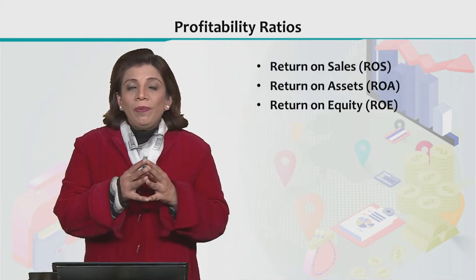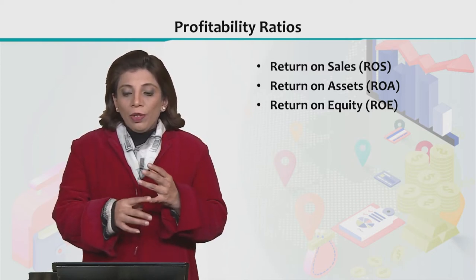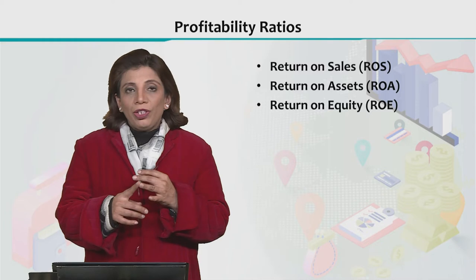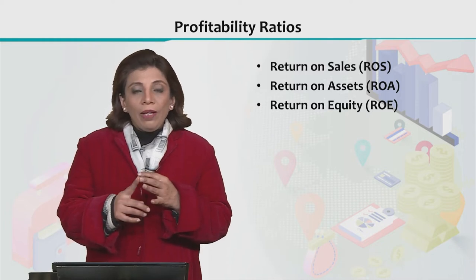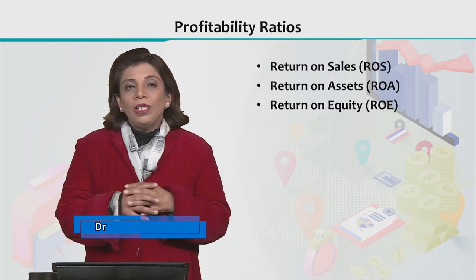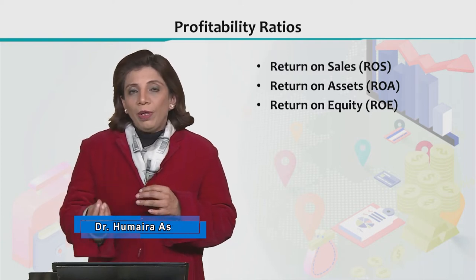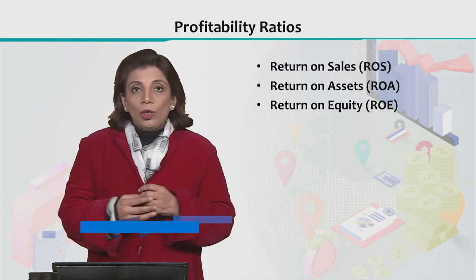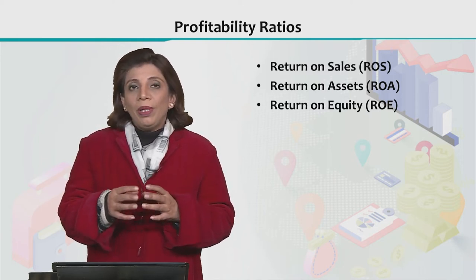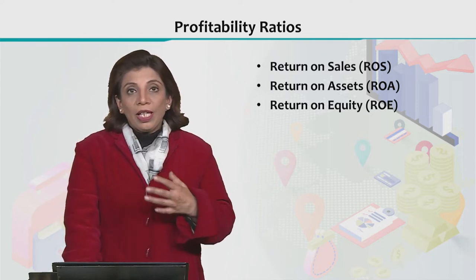The three commonly used profitability ratios include Return on Sales, abbreviated as ROS; Return on Assets, abbreviated as ROA; and Return on Equity, abbreviated as ROE. These are the three types of financial ratios used to assess a company's profitability, and they are the most frequently used in the world.